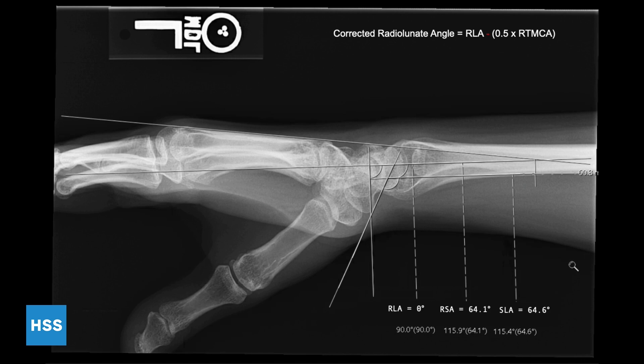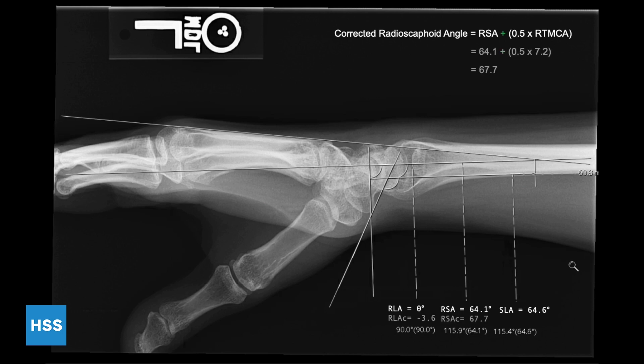This can be plugged into the formula for corrected radial lunate angle, which is RLA minus one-half of the radial third metacarpal angle — in this case, 3.6. Similarly, the corrected radioscaphoid angle is RSA plus one-half of the radial third metacarpal angle, this time measured at 67.7.